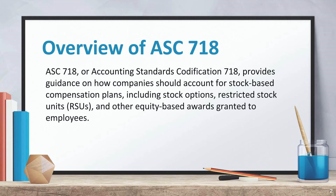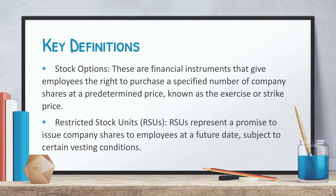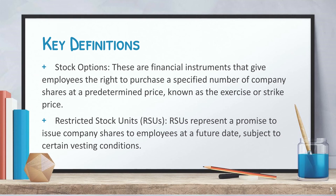To better understand ASC 718, let's familiarize ourselves with some key terms. Stock options are financial instruments that give employees the right to purchase a specified number of company shares at a predetermined price, known as the exercise or strike price. Restricted Stock Units (RSUs) represent a promise to issue company shares to employees at a future date, subject to certain vesting conditions.